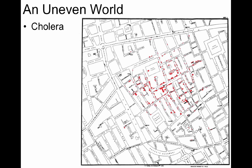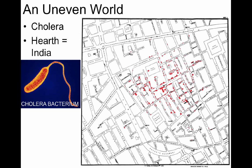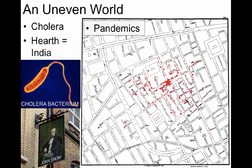Cholera is caused by a bacterial infection of the small intestines and can lead to muscle cramps, vomiting, diarrhea, and in severe cases, death due primarily to dehydration. With its hearth, or origin, in India, cholera spread to the rest of the world starting in the 1800s through a series of pandemics, in which a disease spreads beyond a single region. In the 1850s, cholera spread to London, England. Dr. John Snow marked where people had fallen ill, and you can see a concentration of cases around a star, which signifies a water pump used by hundreds of people. After removing the pump handle and advising people to boil their water, Dr. Snow and other local officials helped cause the terrible pandemic to subside. There's a great example where geography saved the day.